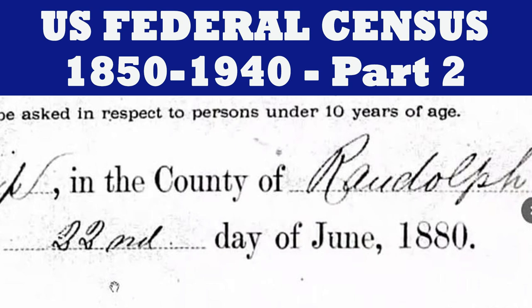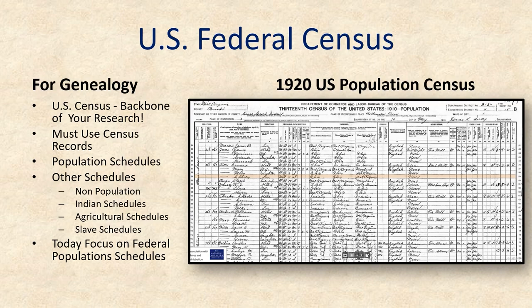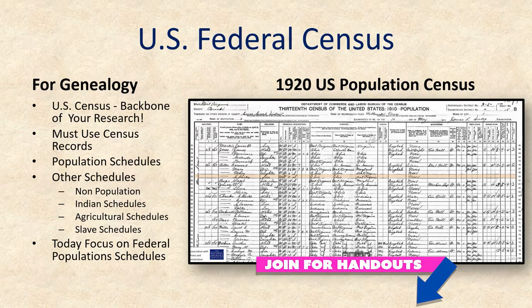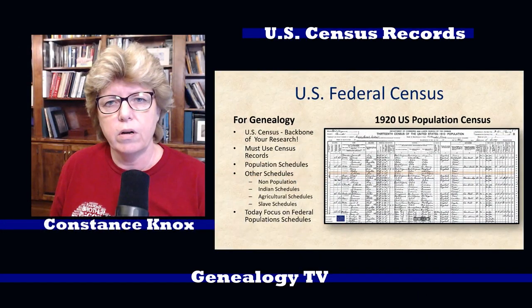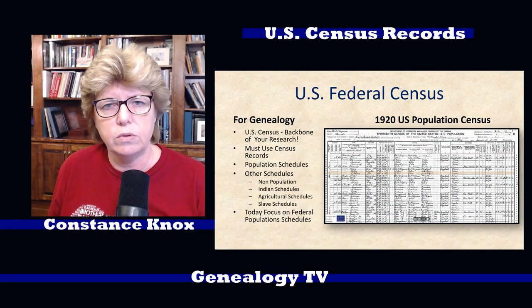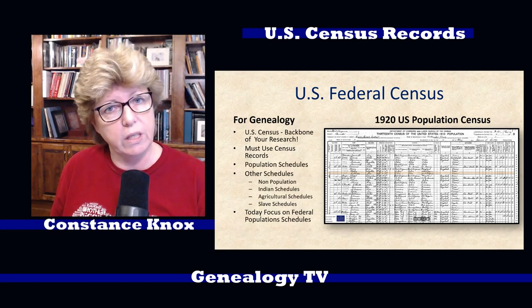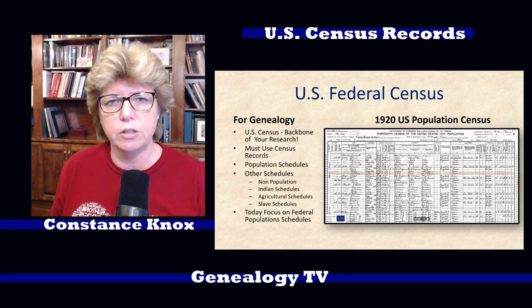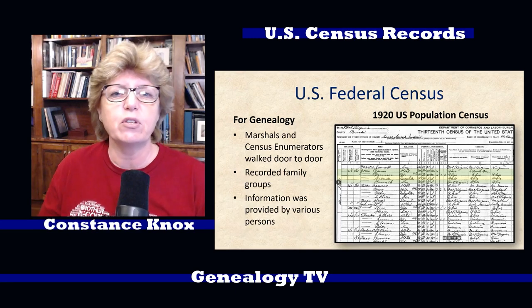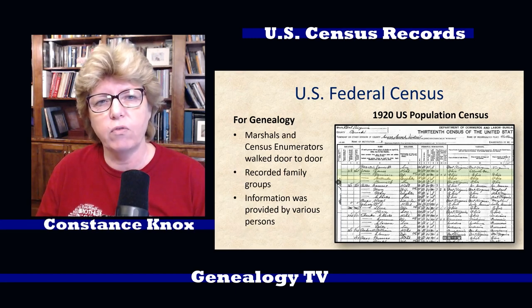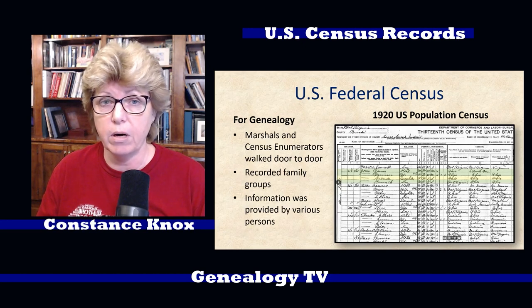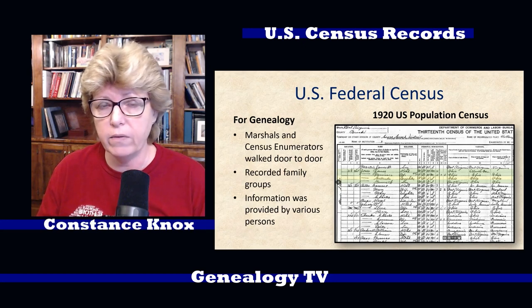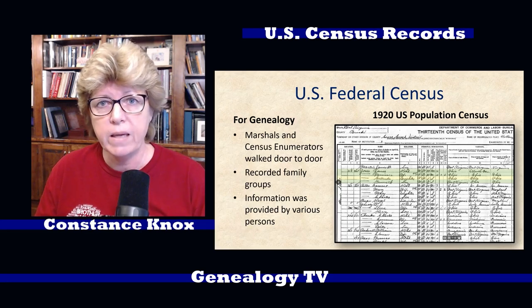Here are a couple clips from the original episode titled U.S. Federal Census Records 1850 to 1940, Part 2. There are several other records that are available as well — those are non-population schedules, the Indian schedules, the agricultural schedules, and some slave schedules — but for today we're going to focus mostly on the population schedules. If you're new to genealogy and you've never used the U.S. Federal Census before, you're going to find this to be probably one of the most valuable resources in your toolkit.